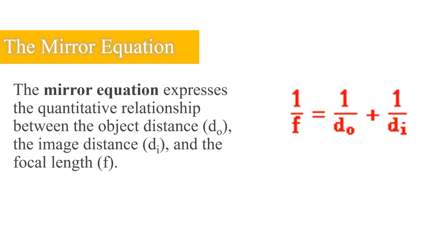Please take note of the mirror equation: 1/F = 1/DO + 1/DI, where F stands for the focal length, DO means object distance, and DI is the image distance.